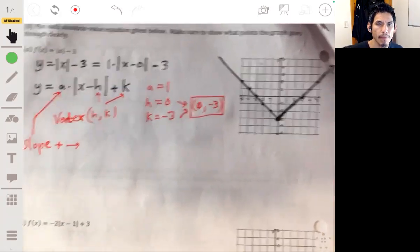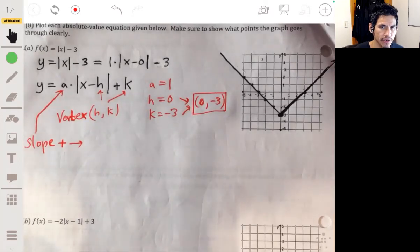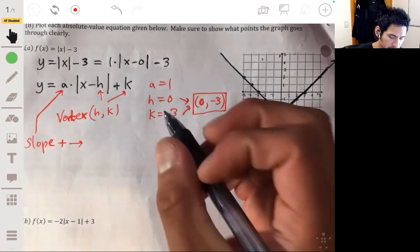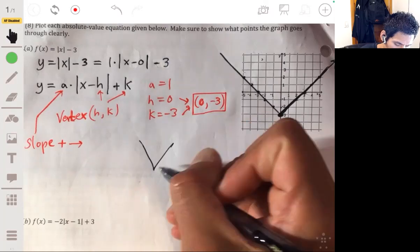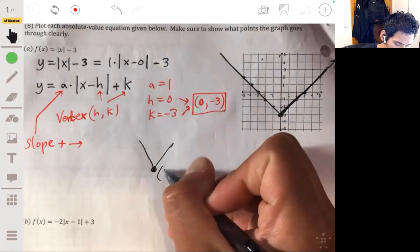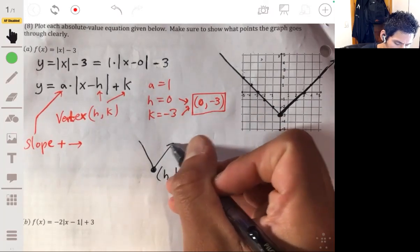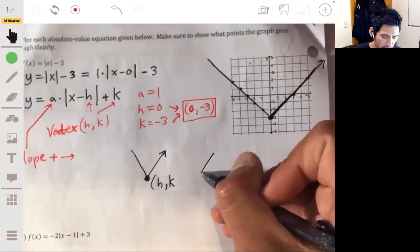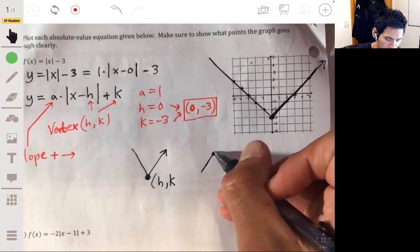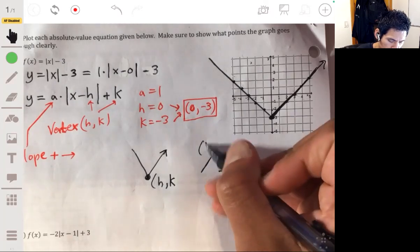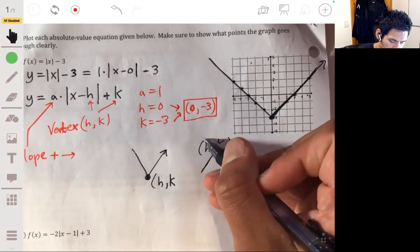And there we go. So I know I kind of went through that slow, but it's important you understand this. So it comes down to this: think of a V-shaped graph with the vertex at h, k. It could also be going downward if the slope is negative, but still it starts at h, k, the vertex.